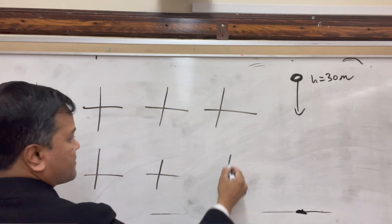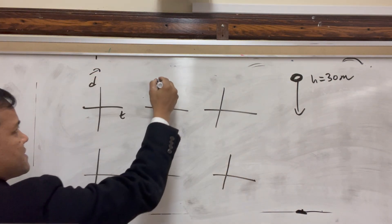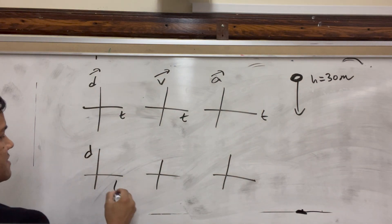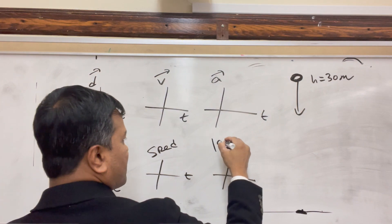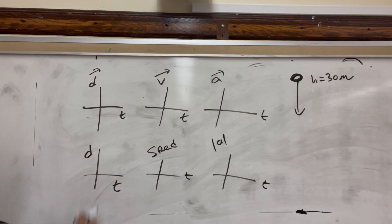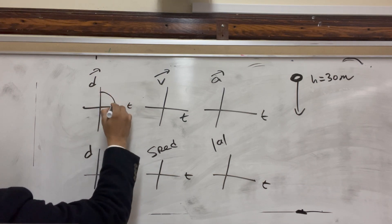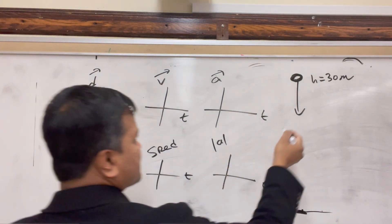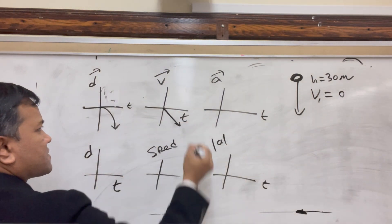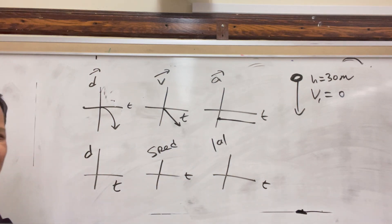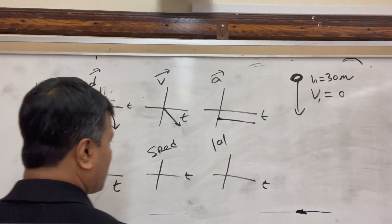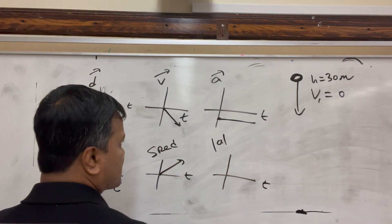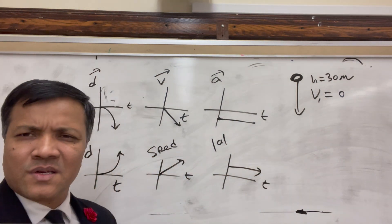For problem 6, we have a D-T graph, a V-T graph, an A-T graph, a displacement graph, a distance vs. time graph, a speed vs. time graph, and acceleration magnitude vs. time. When initial velocity is 0, the graphs must look a specific way. The V-T graph starts at zero and goes negative — a straight line below zero. The A-T graph is a horizontal line below zero. The magnitude of acceleration is just the absolute value — a horizontal line. That was today's test.